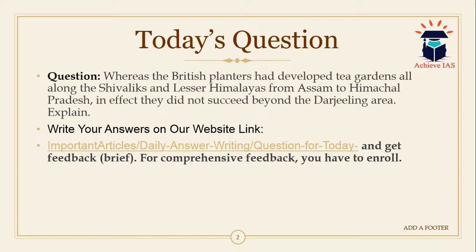Today's question is: whereas the British planters had developed tea gardens all along the Shivalik and lesser Himalayas from Assam to Himachal Pradesh, in effect they did not succeed beyond the Darjeeling area. Explain. You have to explain why tea plantations beyond the Darjeeling area have not succeeded, and also focus on why the Shivalik and lesser Himalayas from Assam to Himachal Pradesh are more convenient for tea plantation.